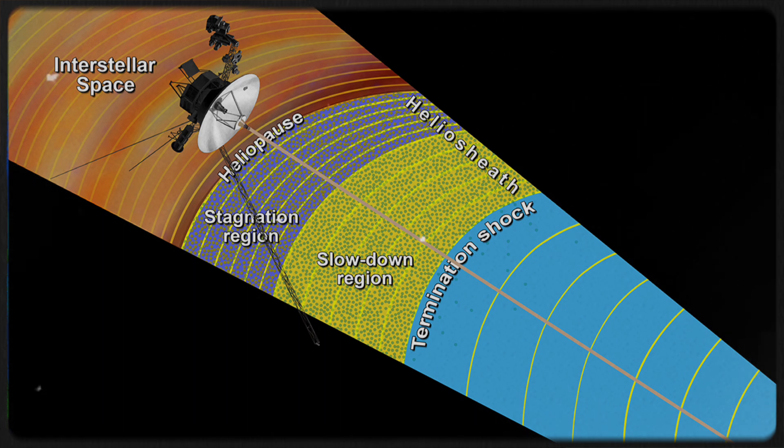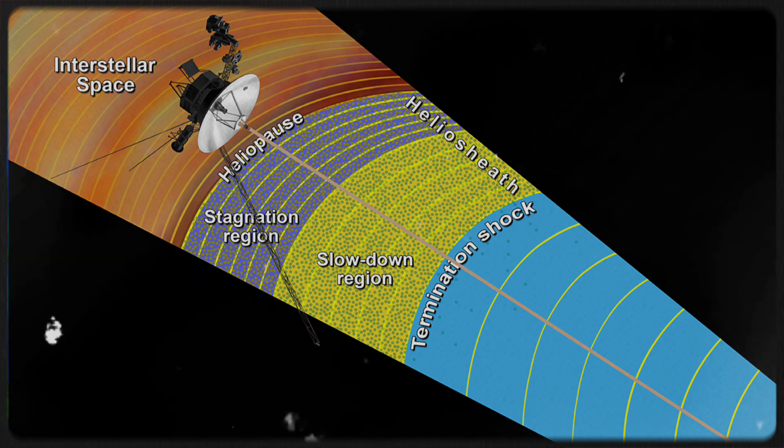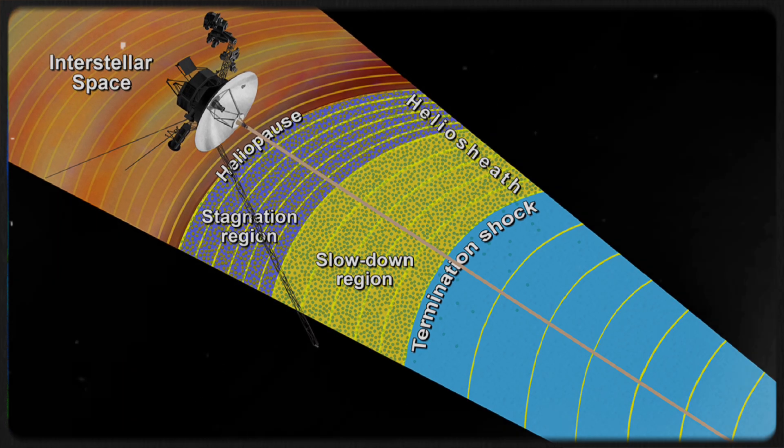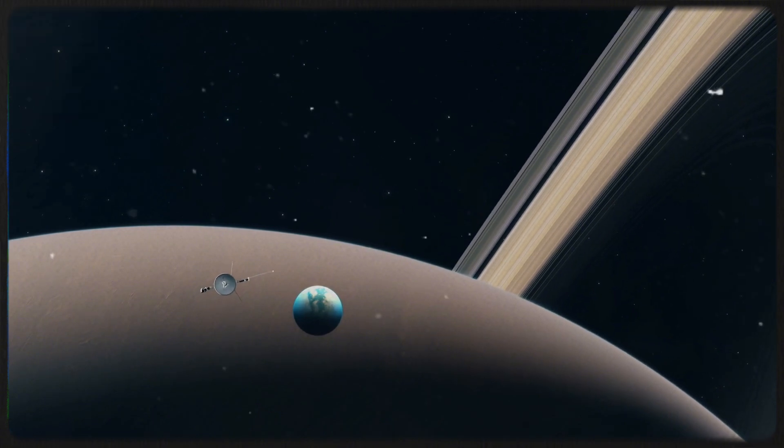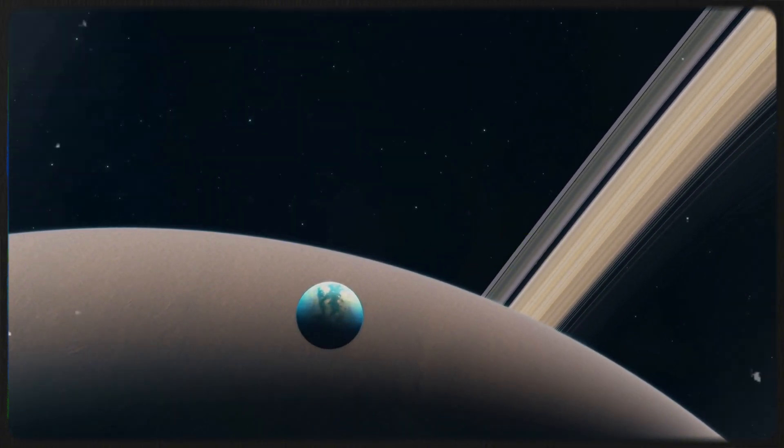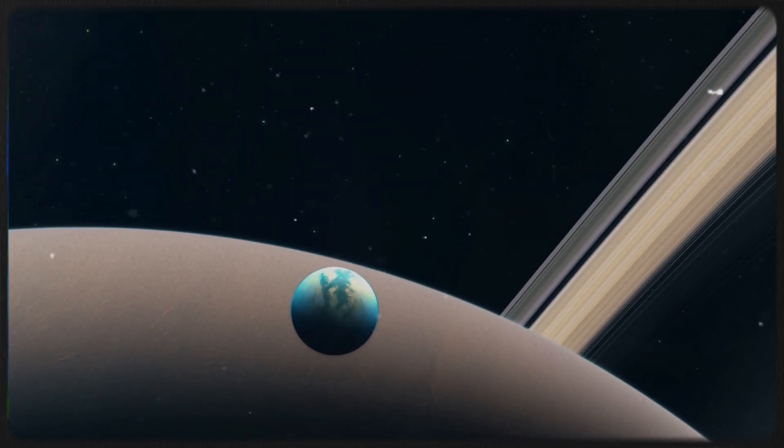The Voyager data reveal many small-scale changes near the heliopause but minimal large-scale field variations, indicating the heliosphere's influence on the interstellar medium. As the spacecraft continue their journey, it is expected that they will eventually move beyond these turbulent regions and encounter the undisturbed interstellar magnetic field.